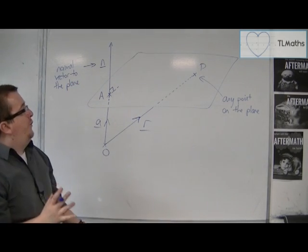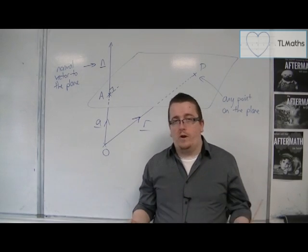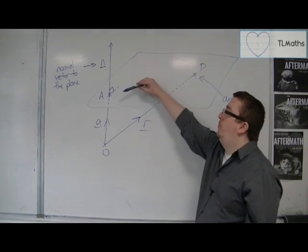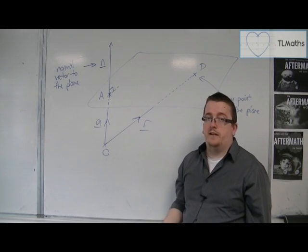So these are two bits of information that I need to be given in order to write down the equation of the plane, effectively. I need the point A, and I need to know a vector that is perpendicular to the plane.